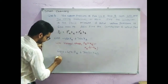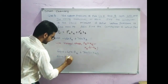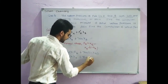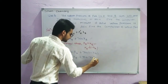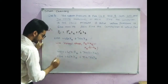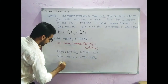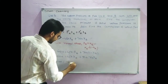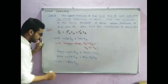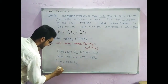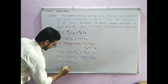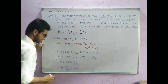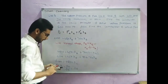Solving this equation: 600 equals 450·X_A plus 700 minus 700·X_A. Moving 700 to the other side gives minus 100 equals 450 minus 700, which is minus 250·X_A. Therefore X_A equals 100 divided by 250, which is 0.4.